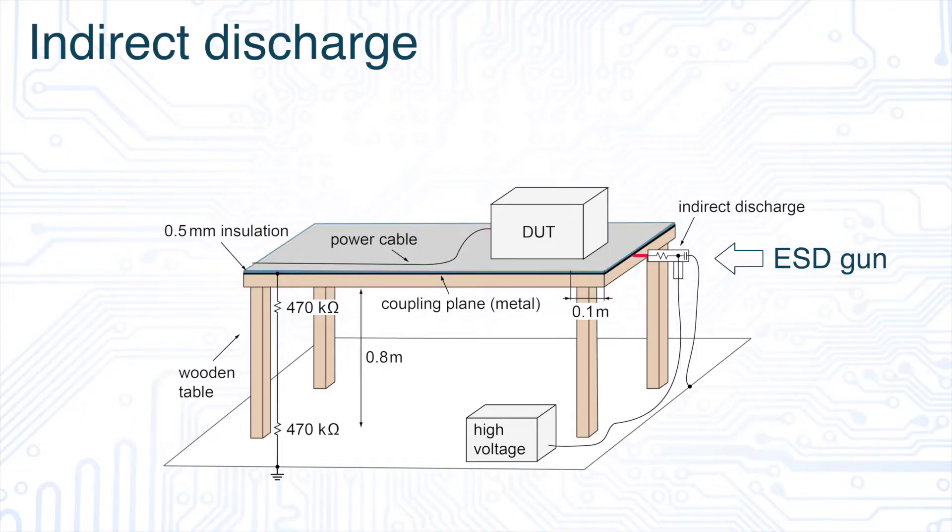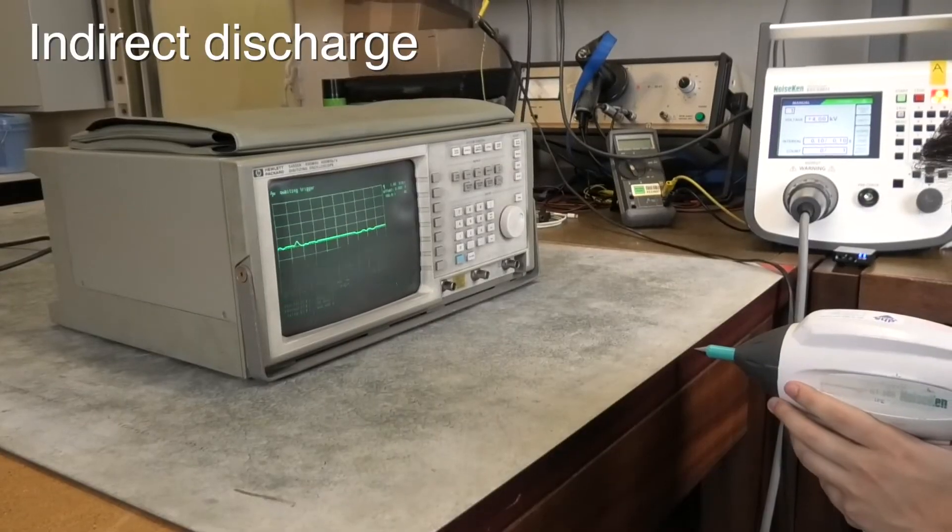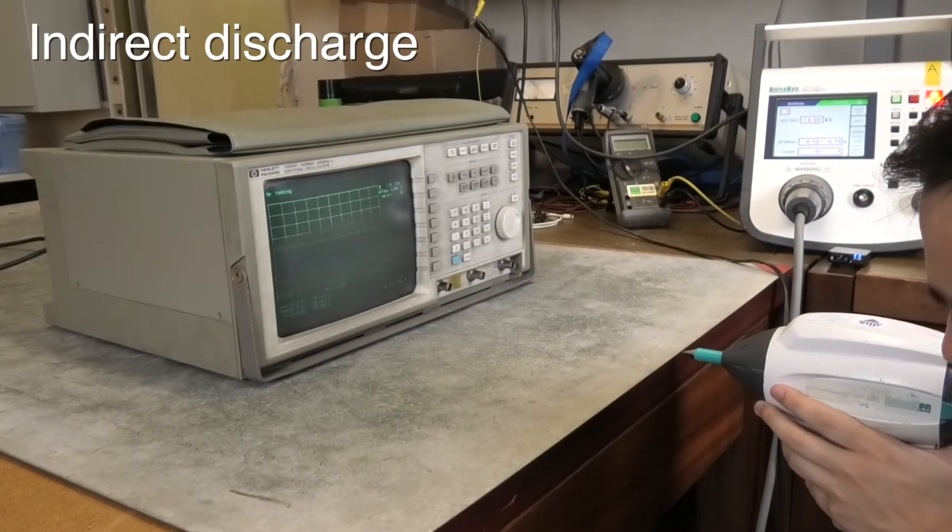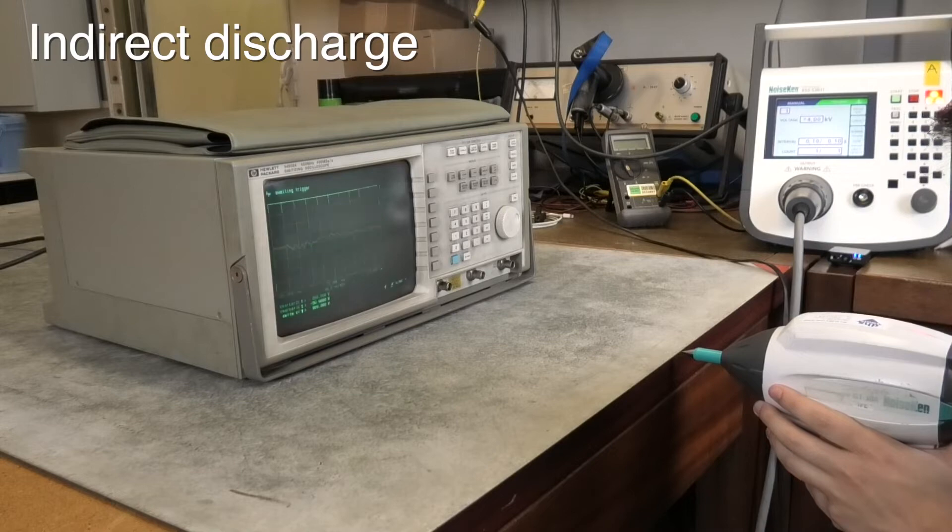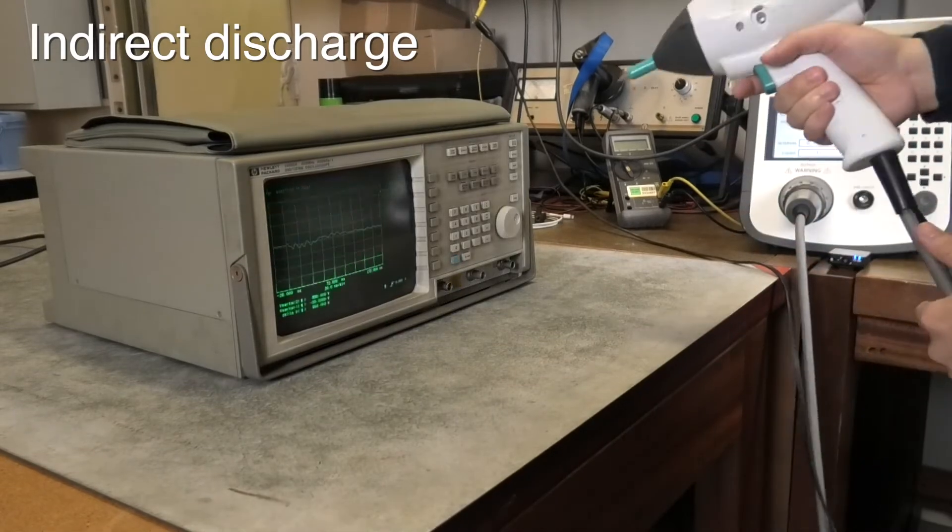We will now start with an indirect ESD test. For this we unload our gun horizontally to the metal plate. The device continues to function properly.